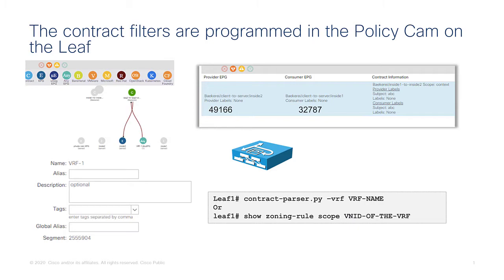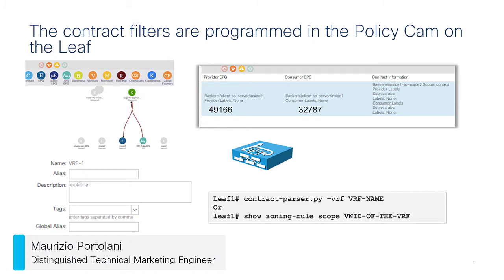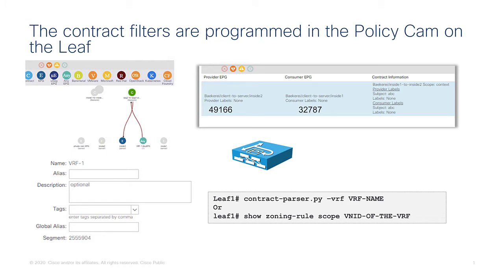When you need to troubleshoot contracts, keep in mind that contract filtering is enforced on the leaves. Whenever you define rules between EPGs at the tenant level, they are eventually programmed on the leaves where the EPGs reside. One key point is to understand, based on traffic flow, on which leaf you should be looking. The hardware is programmed not based on EPG names but based on class ID numbers.